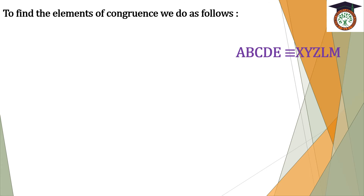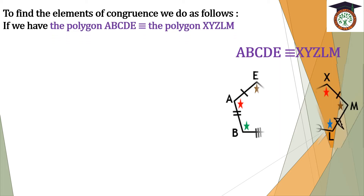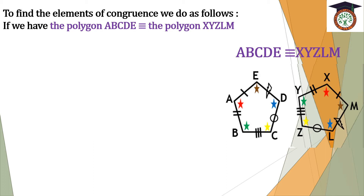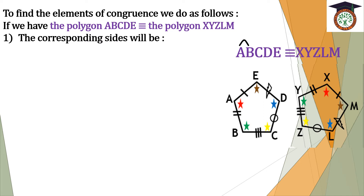To find the elements of congruence, we do as follows. If we have polygon ABCDE is congruent to polygon XYZLM, then to find our elements of congruence: number one, the corresponding sides will be AB and XY, so AB equals XY; BC and YZ; CD and ZL.